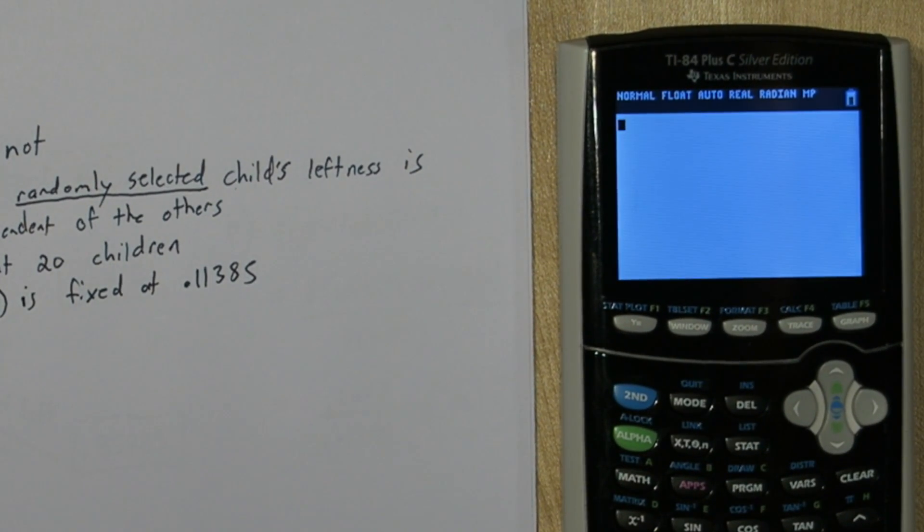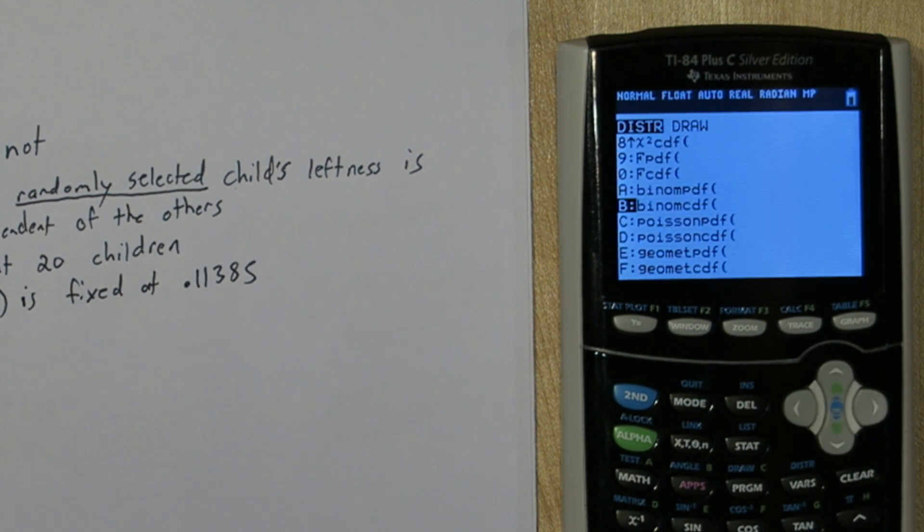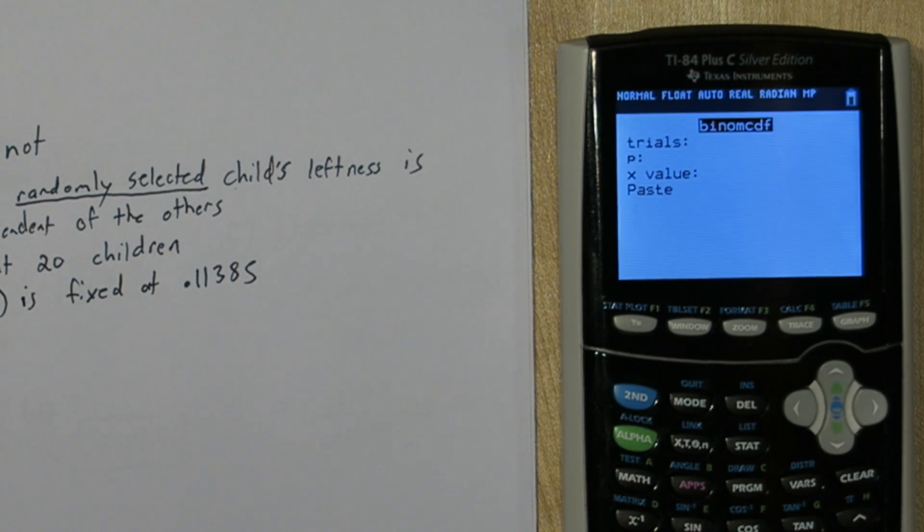Now to do this calculation on the calculator you press 2nd vars and you go to binomcdf. For trials we're going to put 20. For probability of success 0.11385 and the x value it gets a little tricky. We want to find the probability that at least three of the children are left handed. So we're actually going to put a 2 here.